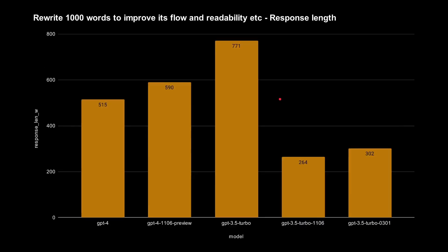Again it's all about the size of the output. GPT-4 gave me around 500 words output, and so did the GPT-4 Turbo. GPT-3.5 Turbo — which took a minute and a half — came up with nearly 800 words, more of a rewrite than a summary, keeping closer to the original. The two faster models gave only 250–300 words output.